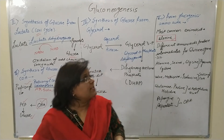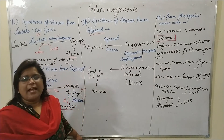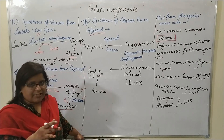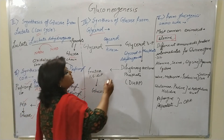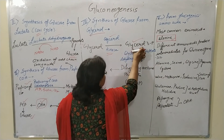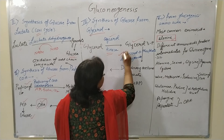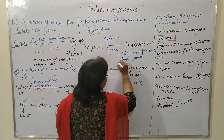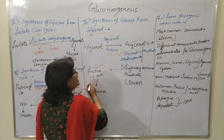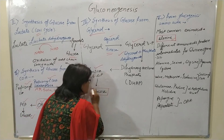For synthesis of glucose from glycerol: glycerol is generated in adipose tissue by metabolization of triglycerides. Glycerol is converted into glycerol-3-phosphate by glycerol kinase, and glycerol-3-phosphate is converted into DHAP (dihydroxyacetone phosphate) by glycerol-3-phosphate dehydrogenase. DHAP is then converted into fructose-1,6-diphosphate, and then via reversal of glycolysis into glucose.